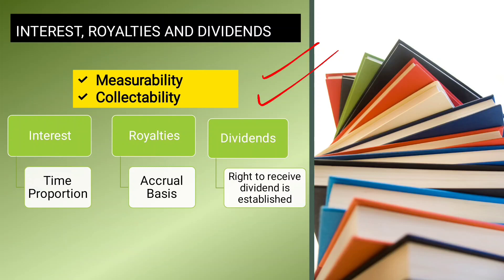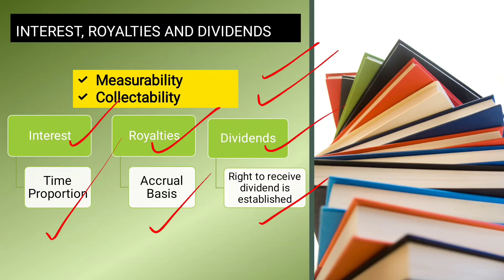For the third form of revenue — use of enterprise resources — there are three items. Interest is recognized on a time proportional basis. Royalty is recognized on an accrual basis. Dividend is recognized when the right to receive the dividend is established.